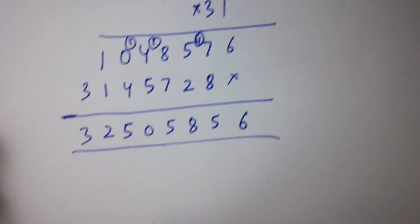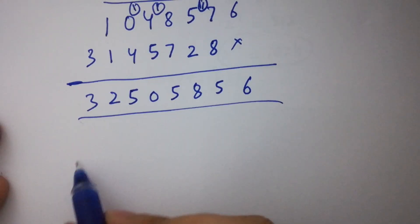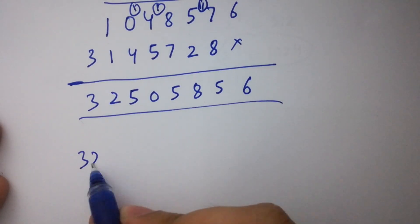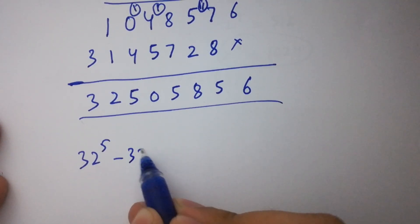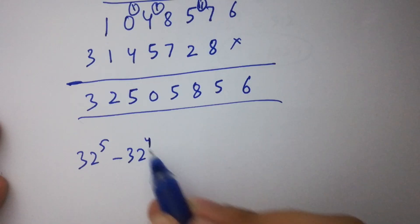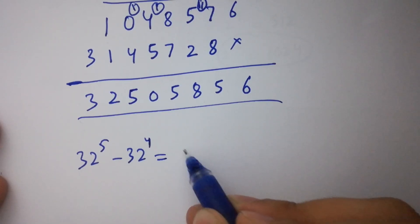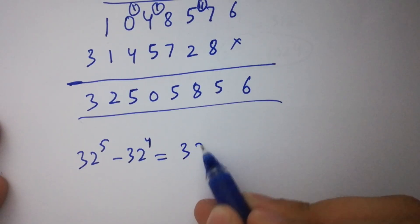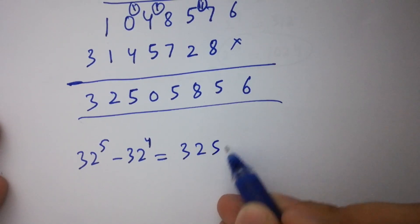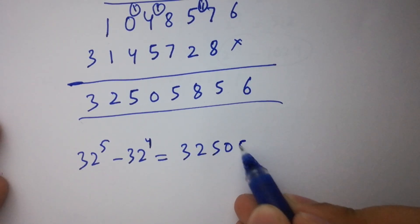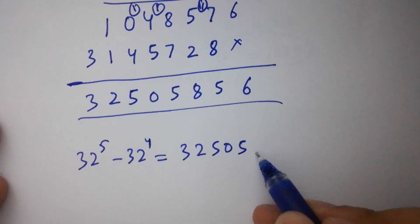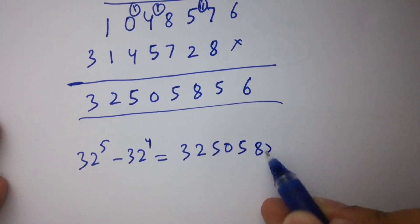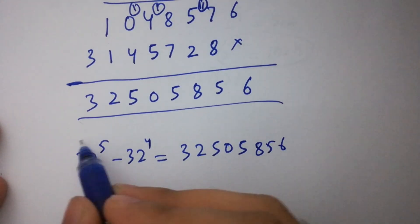So finally, 32 to the power 5 minus 32 to the power 4 equals 32,505,856.